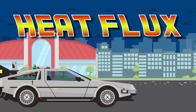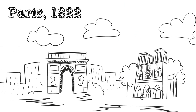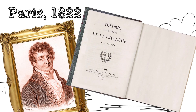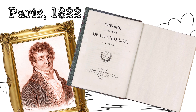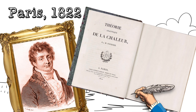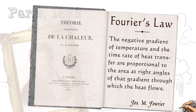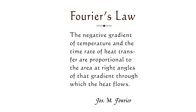To get to the heart of this story, let's take our own time machine back to 1822 when Joseph Fourier published his work entitled The Analytical Theory of Heat, which included his namesake law of heat transfer, Fourier's law, which states the negative gradient of temperature and the time rate of heat transfer are proportional to the area at right angles of the gradient through which the heat flows. Simply put, Fourier's law provides the definition of thermal conductivity and forms the basis of many methods of determining its value.